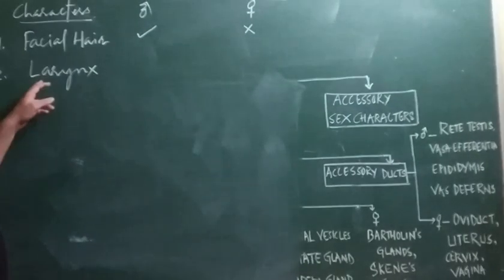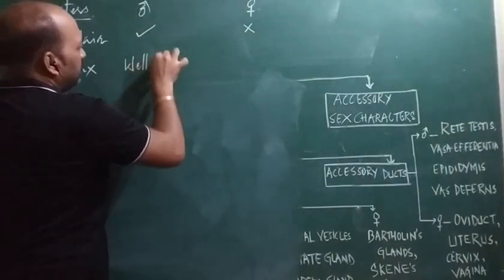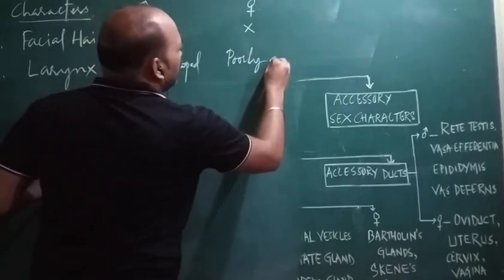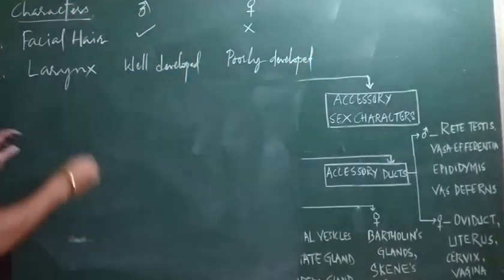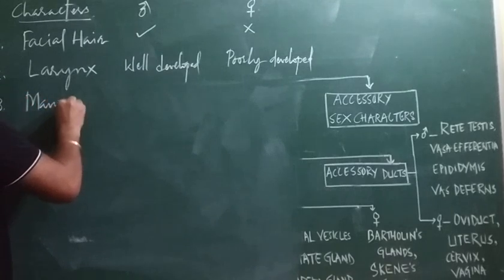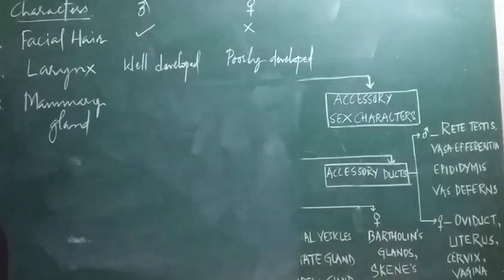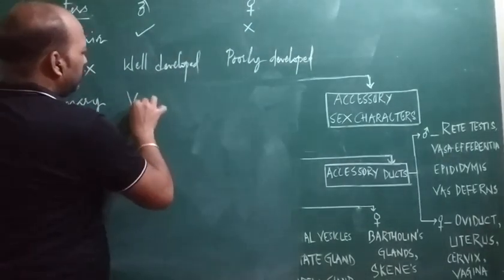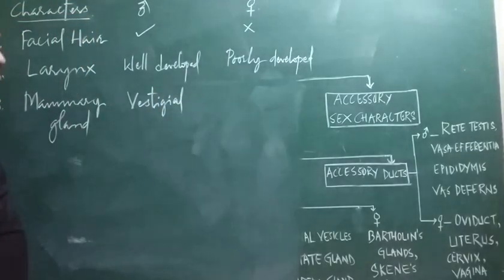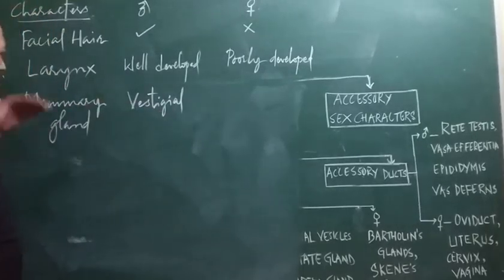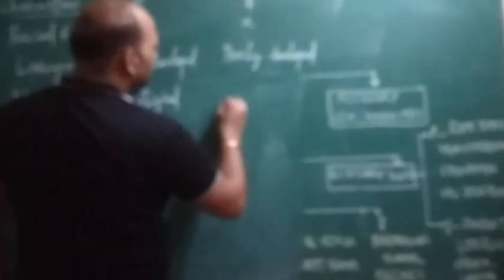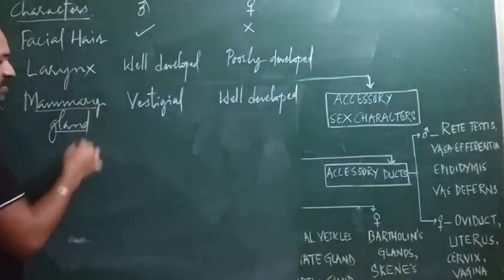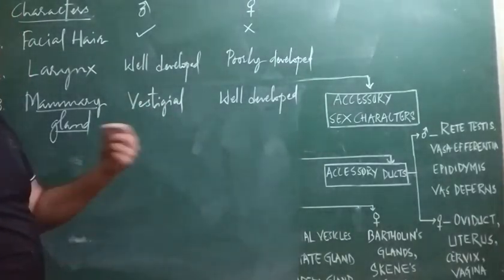The next accessory sex character is the larynx, which is well developed in males and poorly developed in females. The next character is the mammary gland. Mammary glands are seen in both males and females, but in males they are generally vestigial or non-functional — referred to simply as the chest. In females, the mammary glands are well developed and are responsible for secretion of milk, which is necessary for the nourishment of young ones.